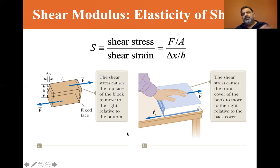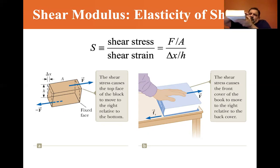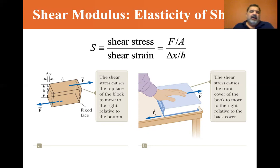The shear stress is the force over the area — this top area here — with the force being applied laterally. The delta X over H is the amount of strain.